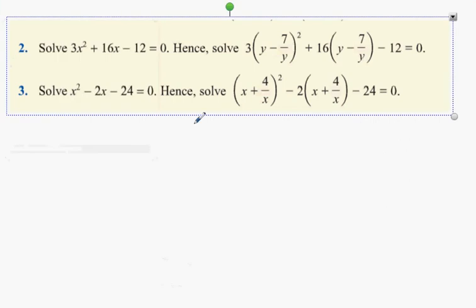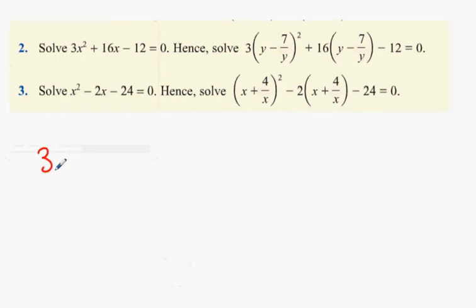This is a quadratic equation, nothing we haven't done before. 3x squared plus 16x minus 12 equals 0.